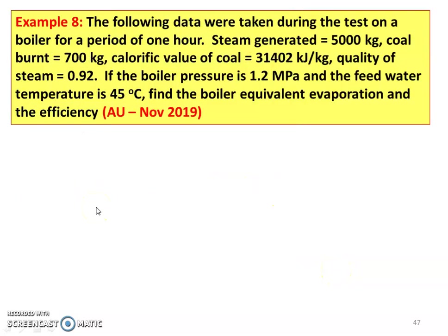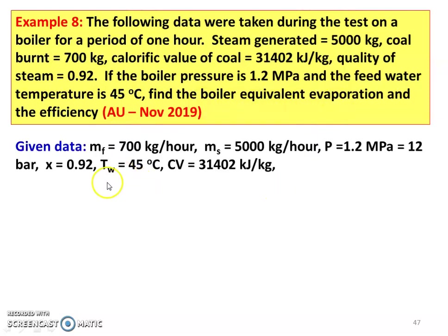Example 8 from the November 2019 question paper: The following data were taken during a test on a boiler for a period of 1 hour — steam generated: 5000 kg, coal burnt: 700 kg, calorific value of coal: 31,402 kJ/kg, dryness fraction of steam: 0.92. Boiler pressure is 1.2 MPa (12 bar) and feed water temperature is 40.3°C. Find the equivalent evaporation and boiler efficiency. Given: mass of fuel = 700 kg/hr, mass of steam = 5000 kg/hr, pressure = 12 bar, dryness fraction = 0.92, water temperature = 40.3°C, calorific value = 31,400 kJ/kg.